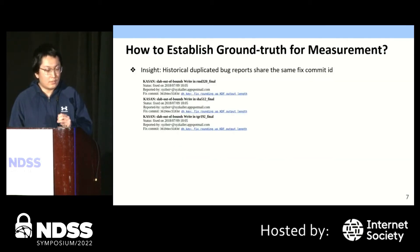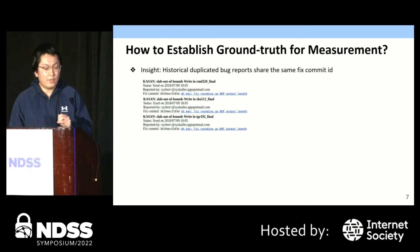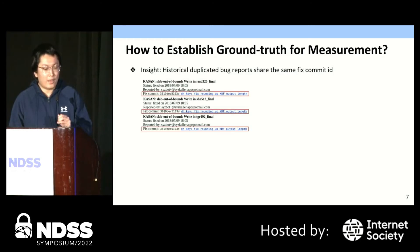For measurement, we need to establish a ground-truth set in which all crash reports belonging to the same bug are correctly grouped. To build a ground-truth set, our insight is that Syzkaller will mark the fixed commit in the crash report for every fixed bug. This fixed commit refers to the patch that can remediate the reported crash. Therefore, we treat reports sharing the same fixed commit ID as the same bug and build the ground-truth set.